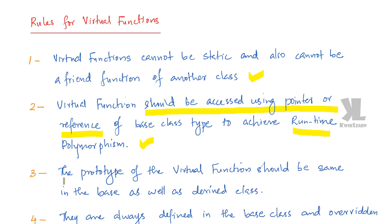The third rule is the prototype of the virtual function should be the same in the base class as well as in the derived class. That means the function name, the number of arguments, the type of arguments, and the order of arguments should all be the same.